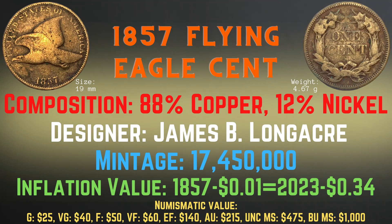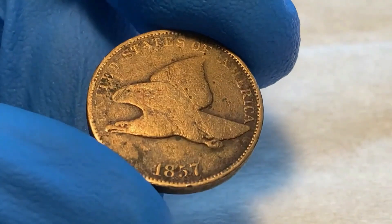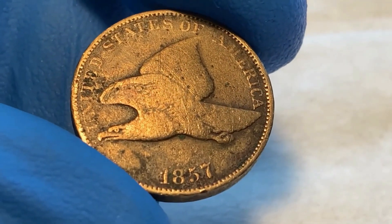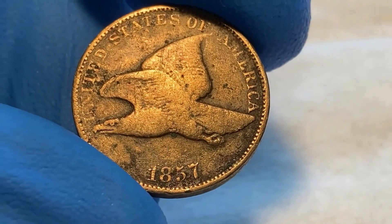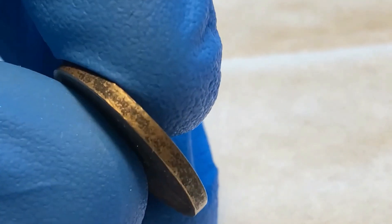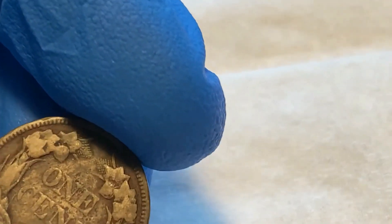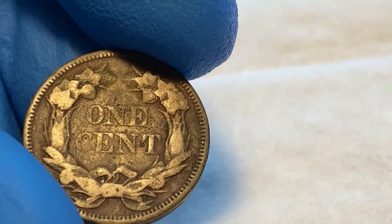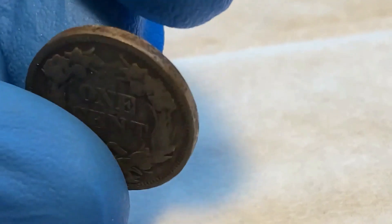Now let's take a closer look at the 1857 Flying Eagle cent from my collection. This coin has a little bit of luster and is slightly corroded, as it is copper. The details are still there and still pretty clear. If I were to grade this coin, I would grade it in fine condition.